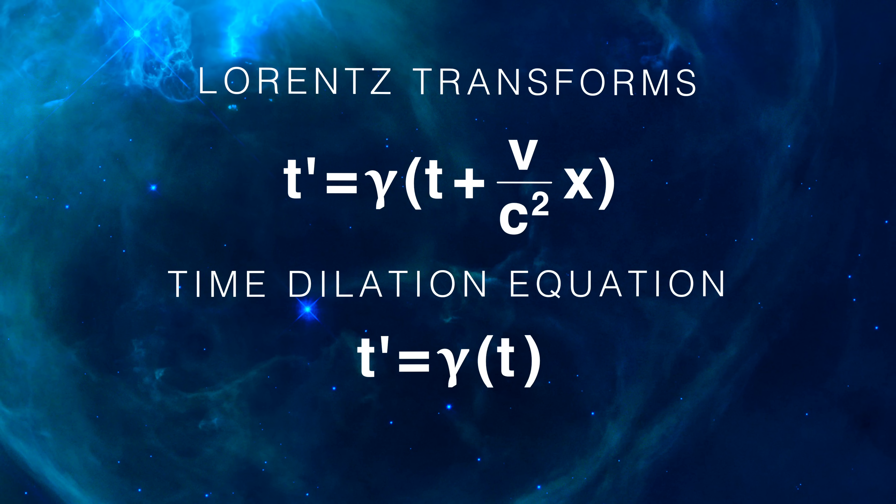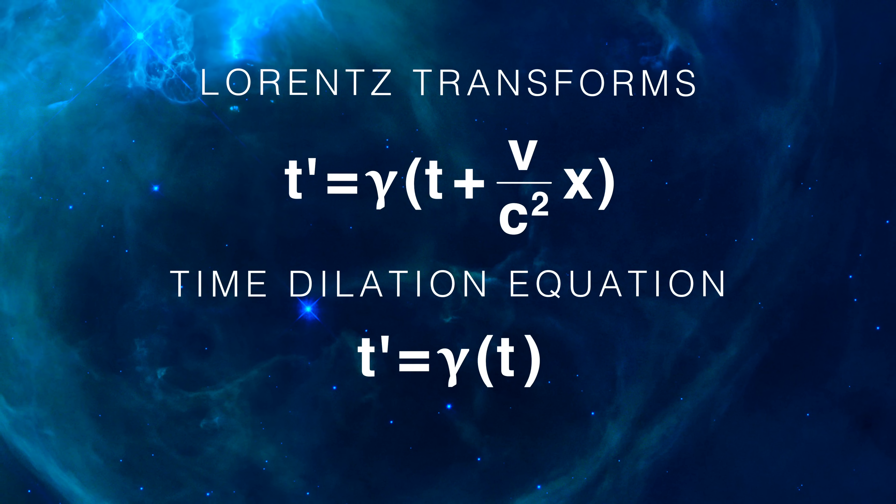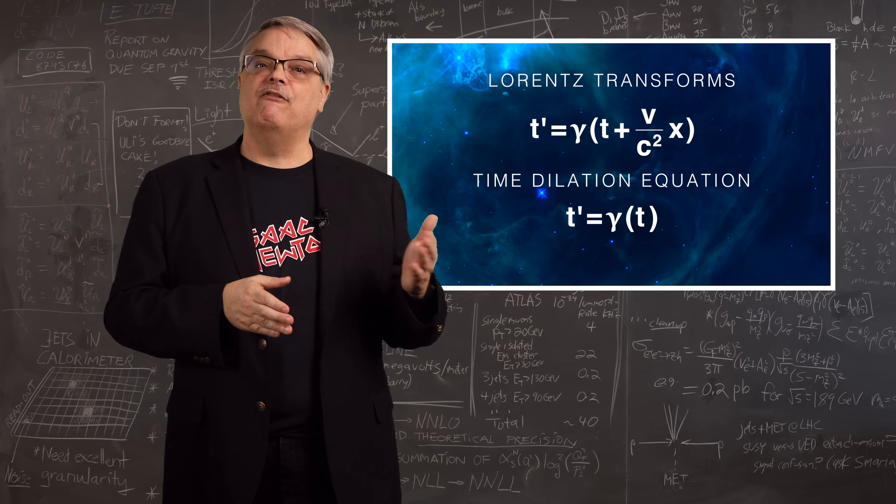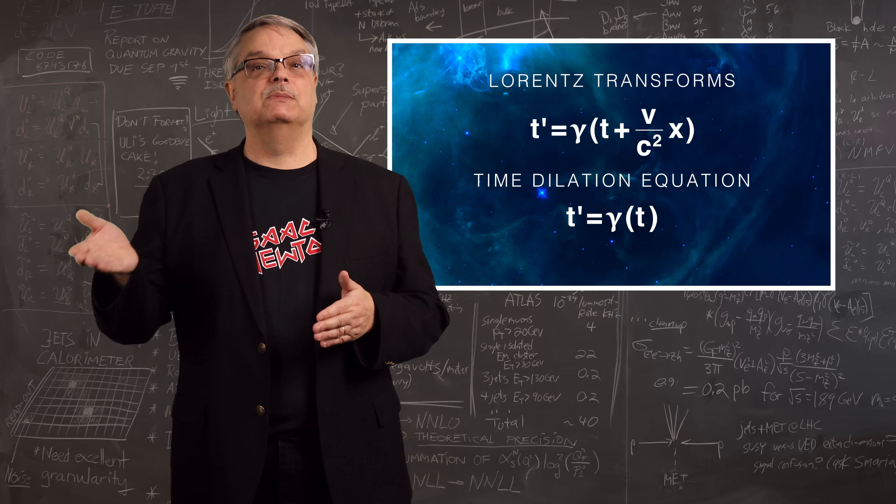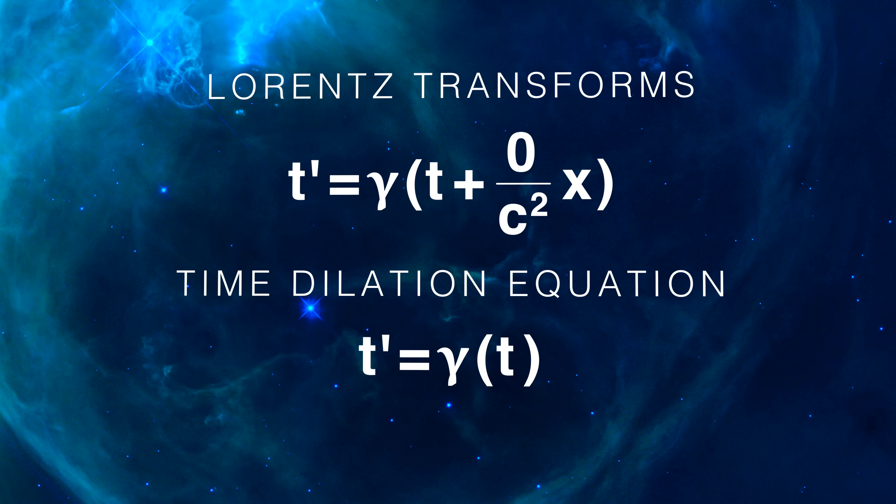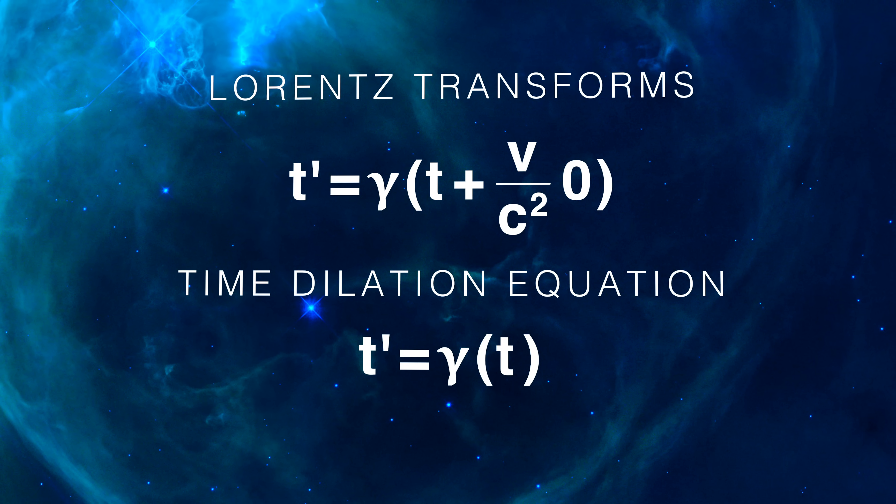So the first thing you see is that the time dilation equation is a special case of the more general one. They are the same only if that extra term of v over c squared times x substationary equals zero. And that is true only if either the velocity v is zero, or x substationary is zero.